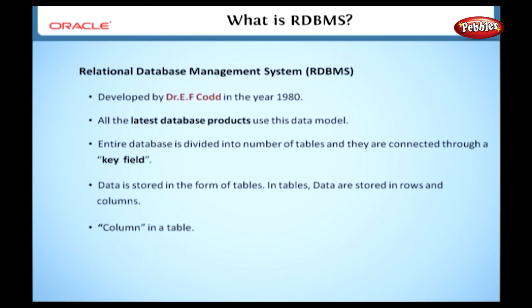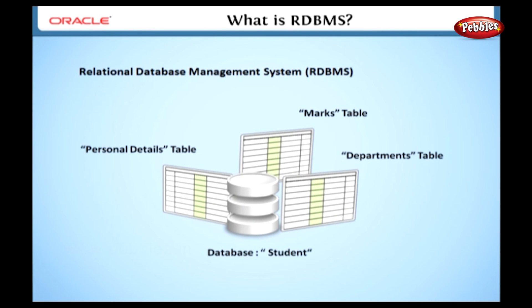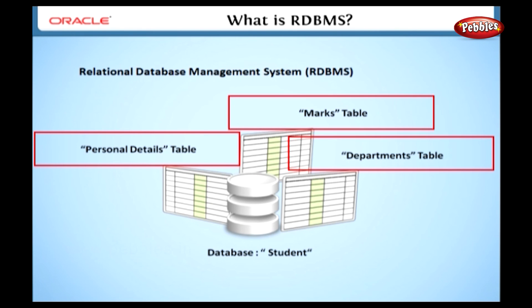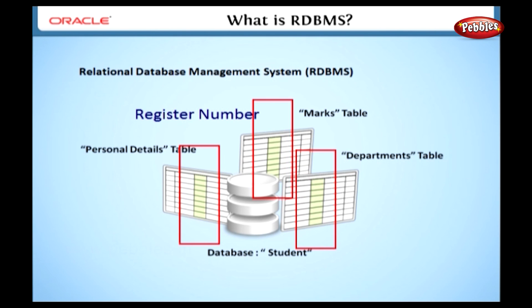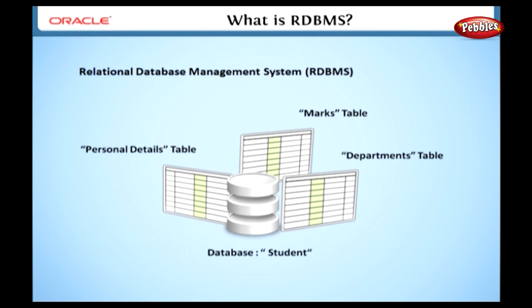We mentioned a term called key field — let's see what is meant by a key field. A key field is a column in a table. By using this column, different tables are linked together. For example, in a student database, it consists of different tables like personal details, department, marks, and so forth. We can relate these tables through a column — the register number — because all these tables have a register number column. This column is a key field.